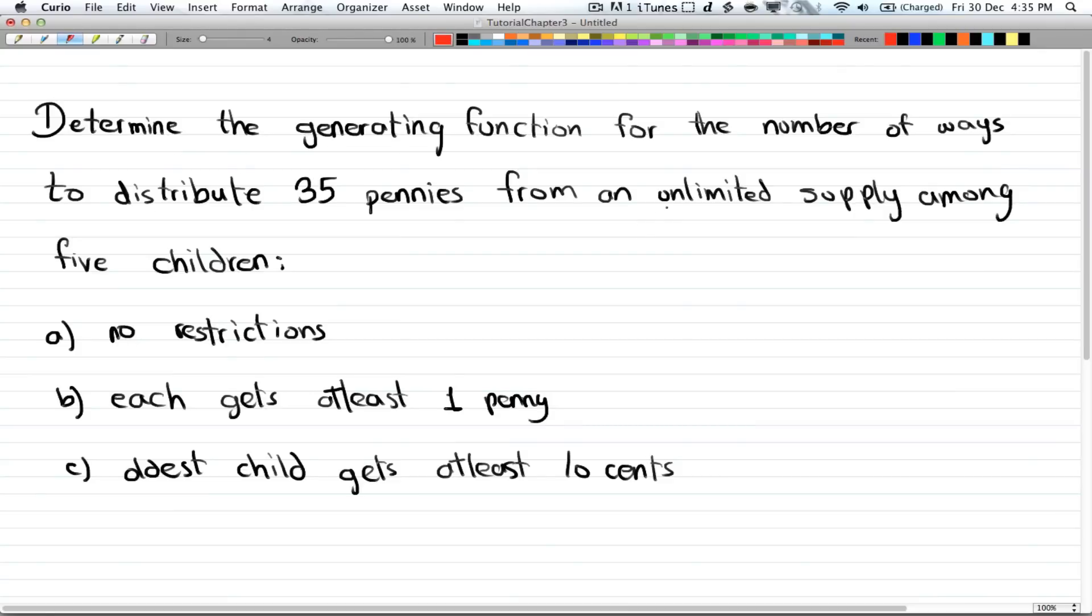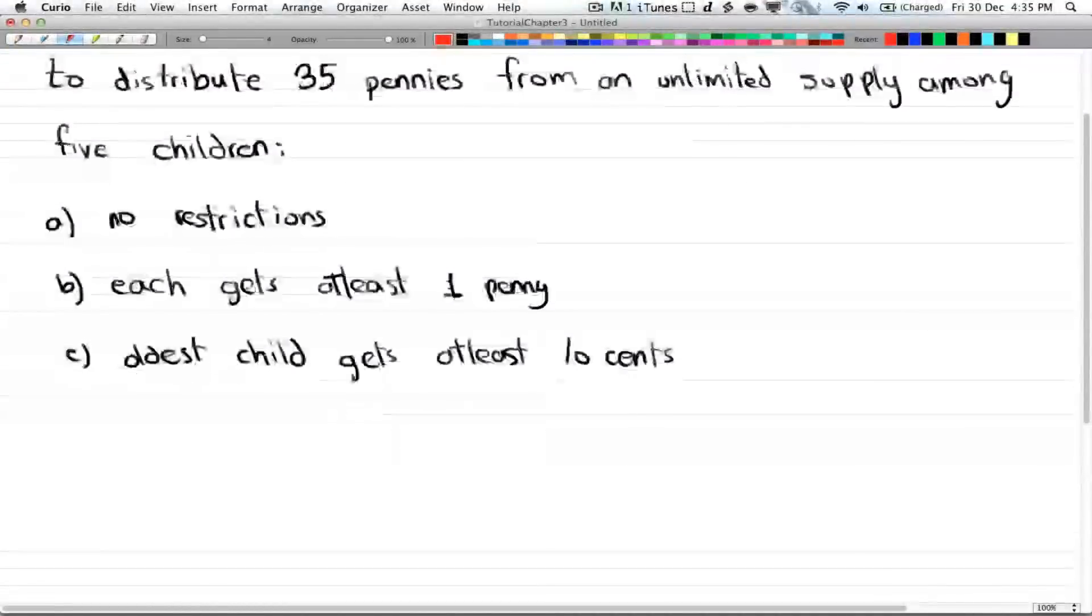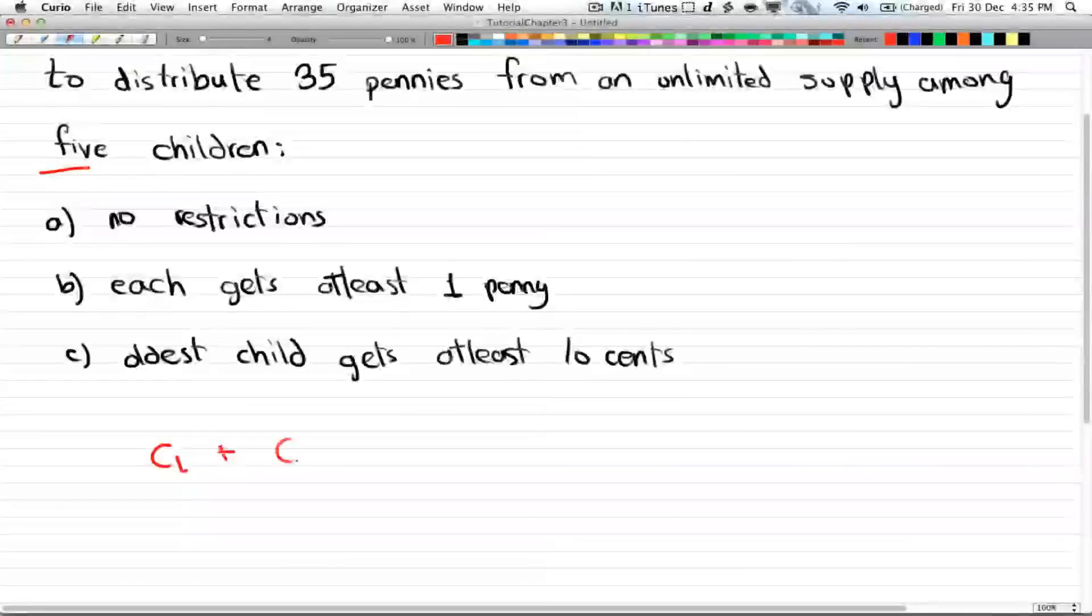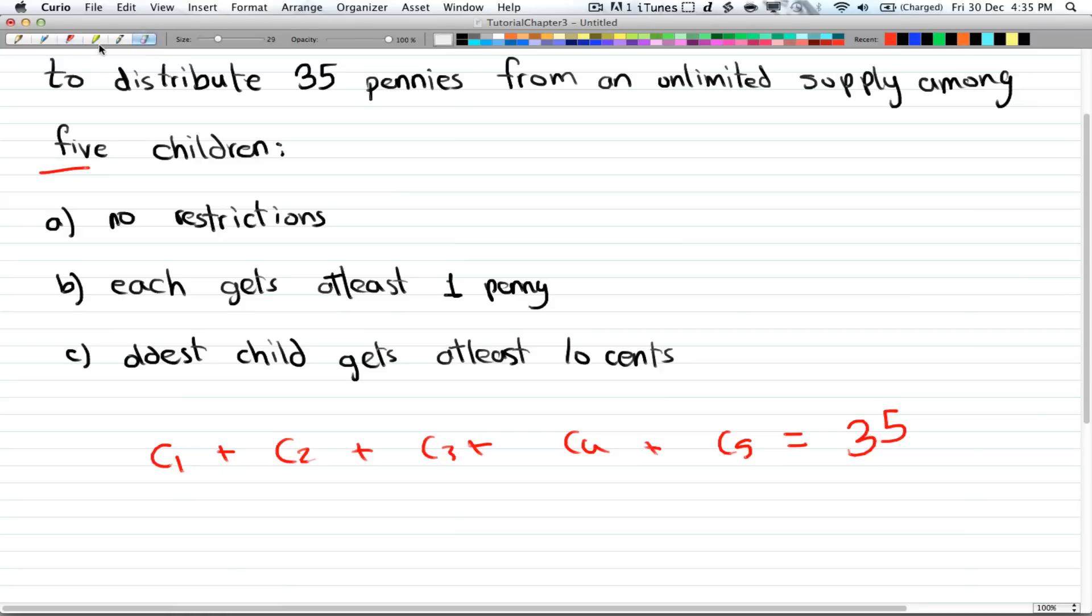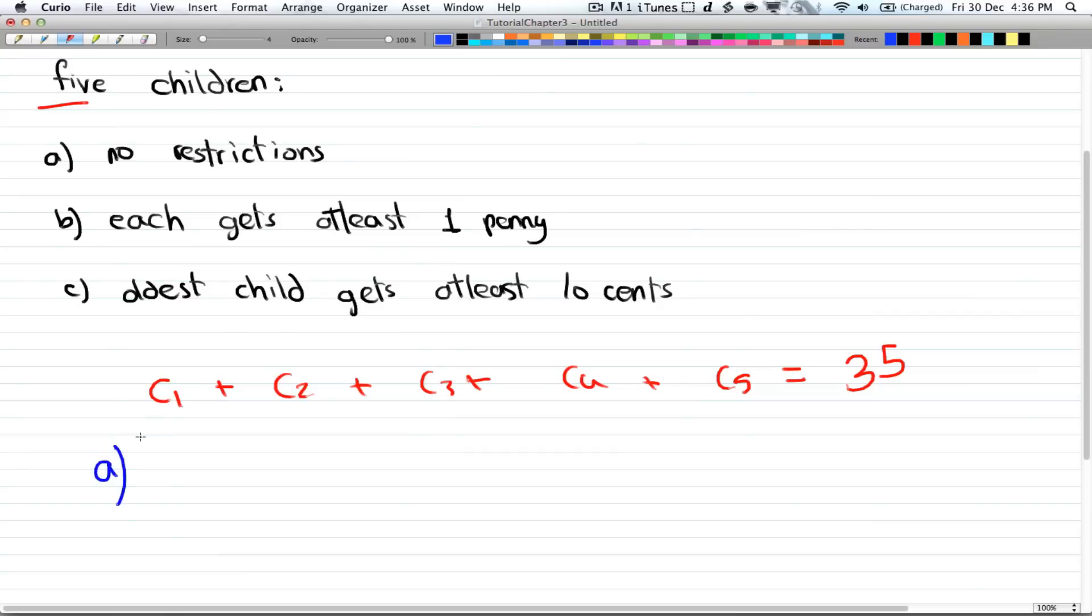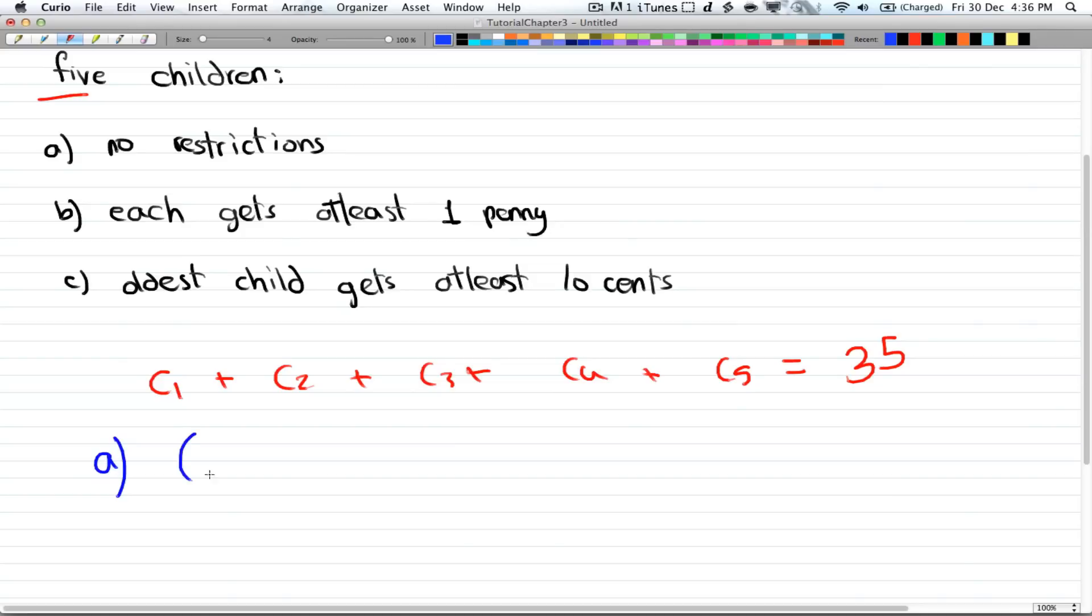Okay, so determine the generating function for the number of ways to distribute 35 pennies from an unlimited supply among 5 children. So first of all, you have 5 children. So you have C₁ + C₂ + C₃ + C₄ + C₅. And that will be equal to 35, since you have 35 pennies to distribute. So for part A, you have no restrictions. So there is no upper limit there, and the lower limit is 0. So that will be equal to 1 + x + x² + x³ + x⁴, all the way to infinity, to the power of 5. And that will be equal to x to the power of 35. So that's the number of ways with no restrictions.